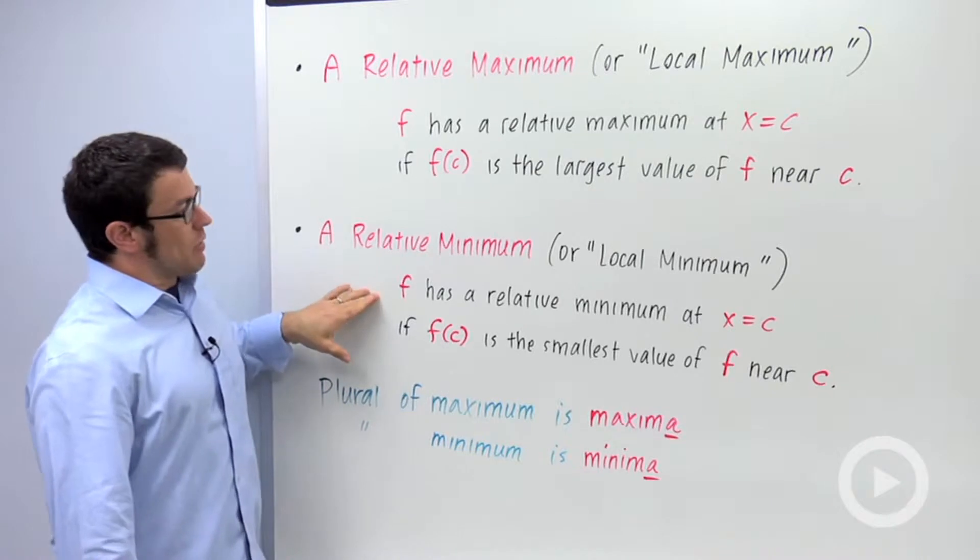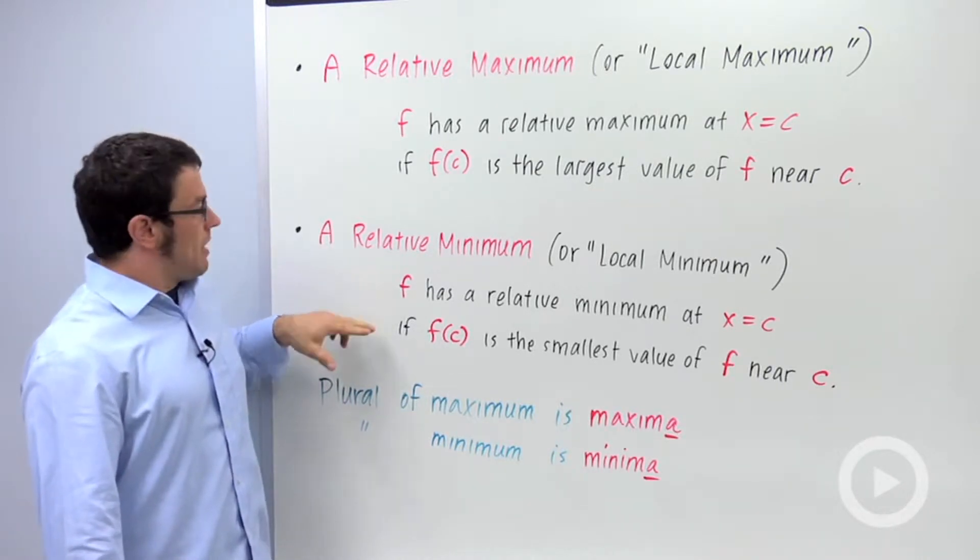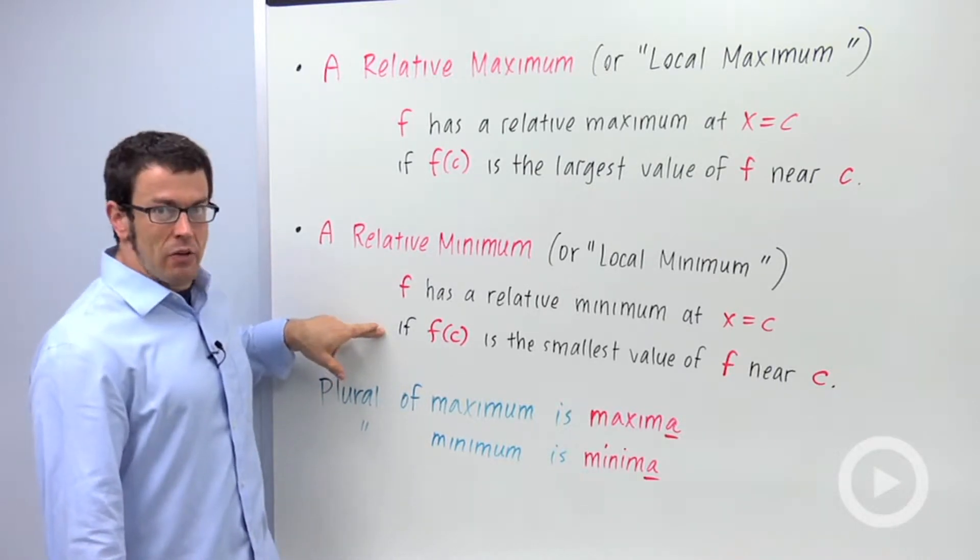And relative minimum, f has a relative minimum at x equals c if f of c is the smallest value of f near c.